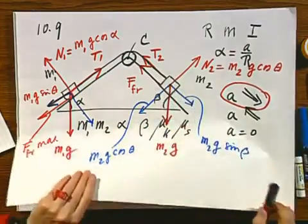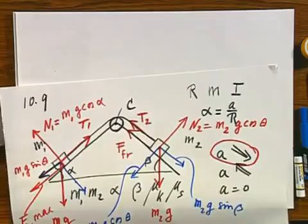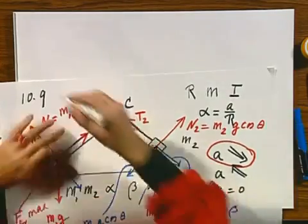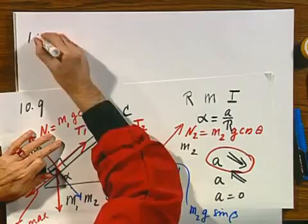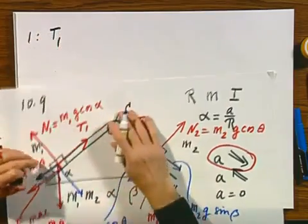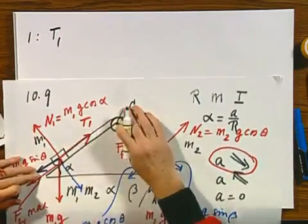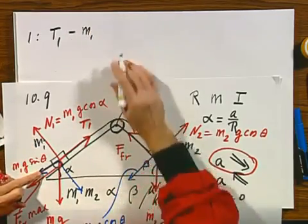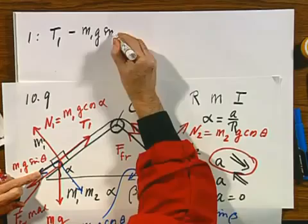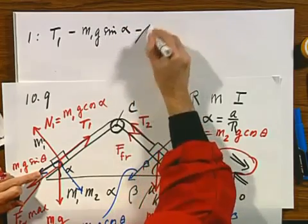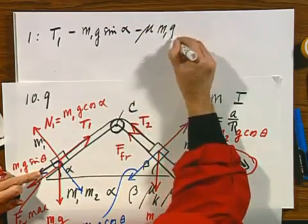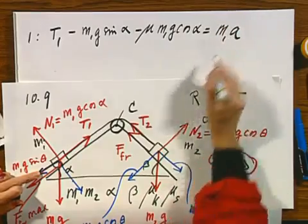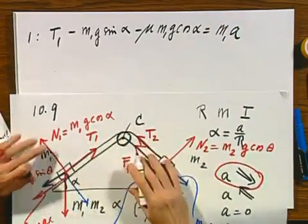Very well, so now we are ready to set up our differential equations. Quite a job actually. For object number one, I have T1, which is the positive direction, minus m1 g sine alpha minus mu times m1 g cosine alpha. That must be m1 times a. That's the acceleration along the slope.